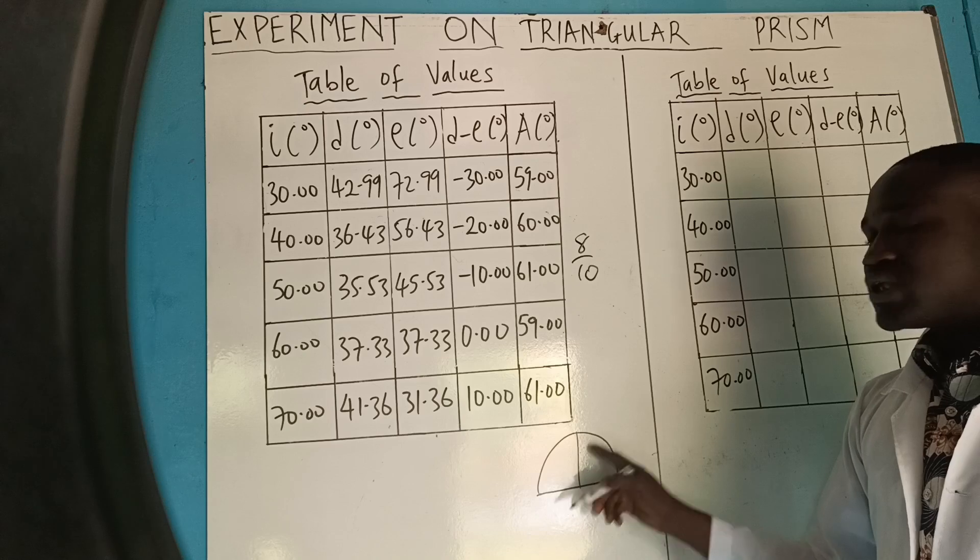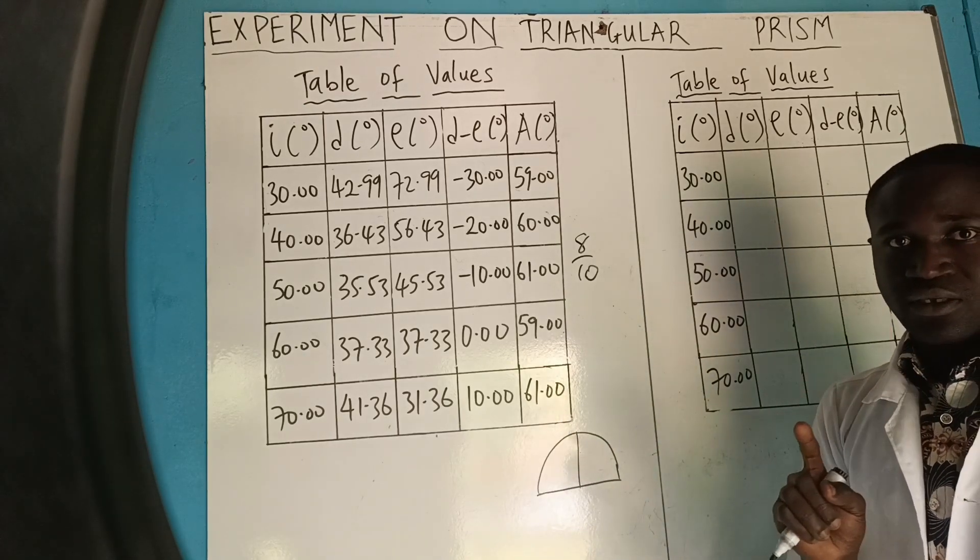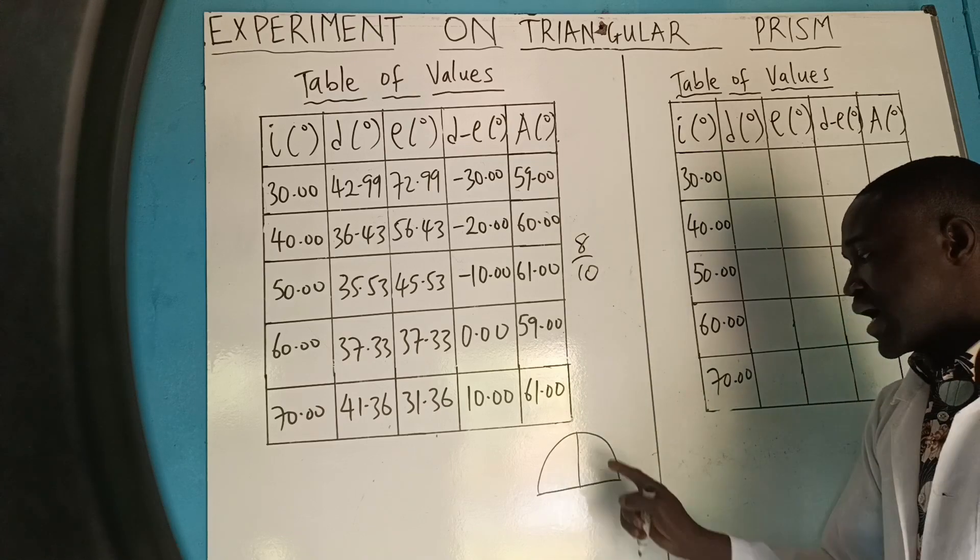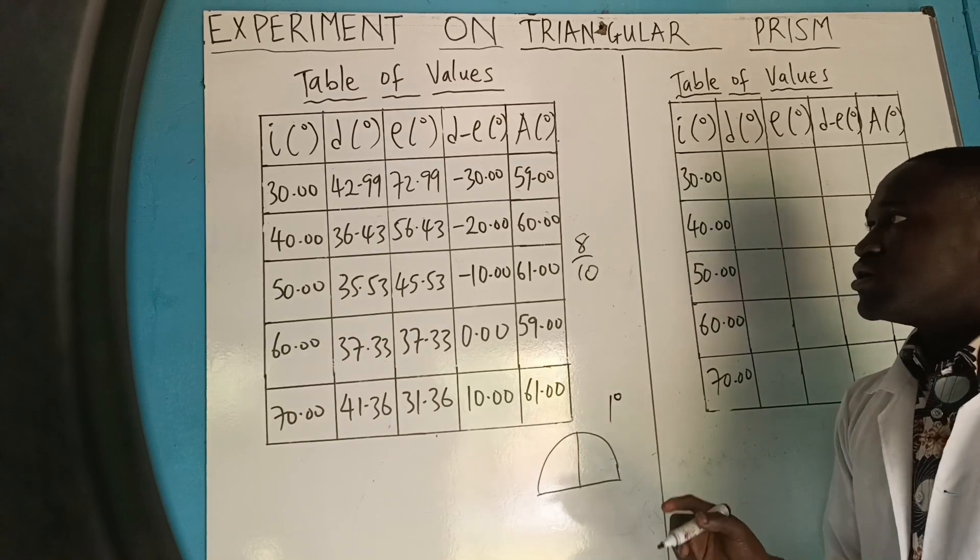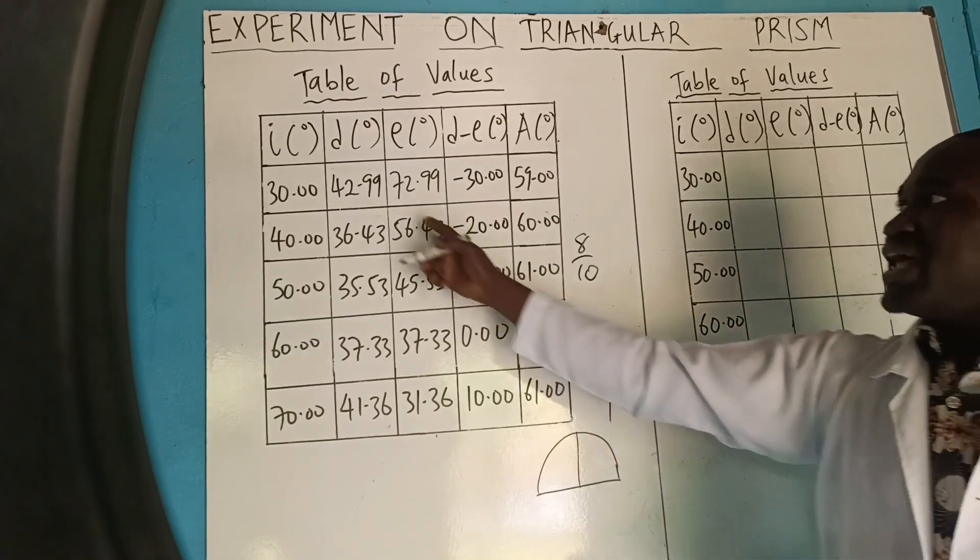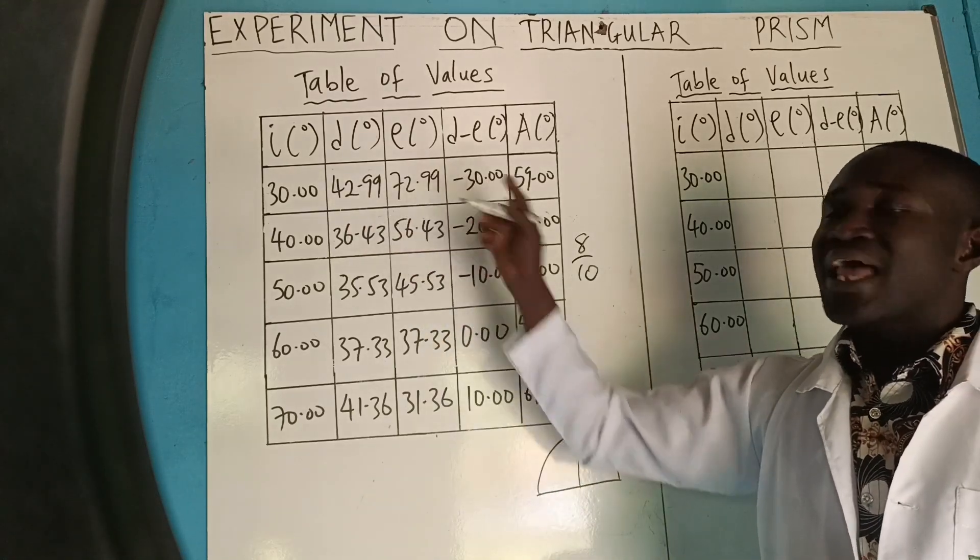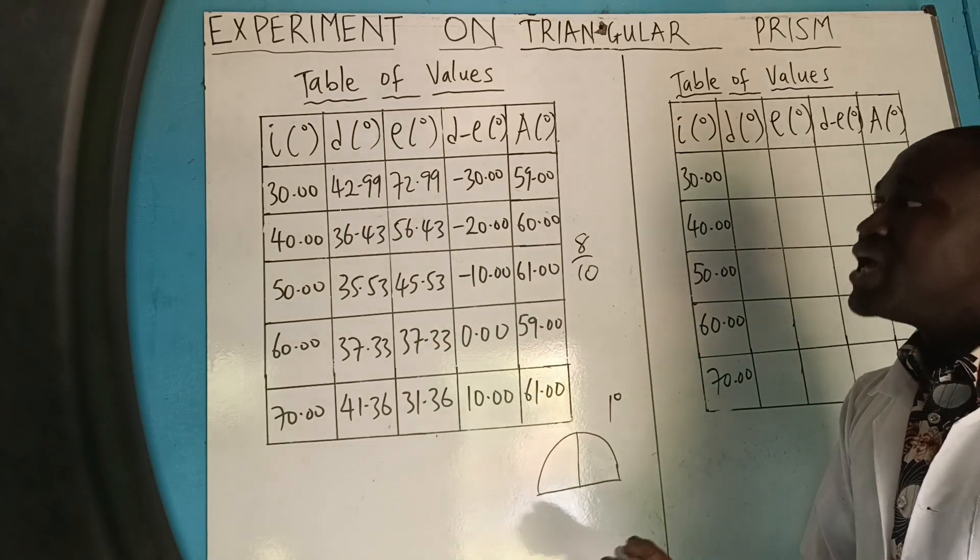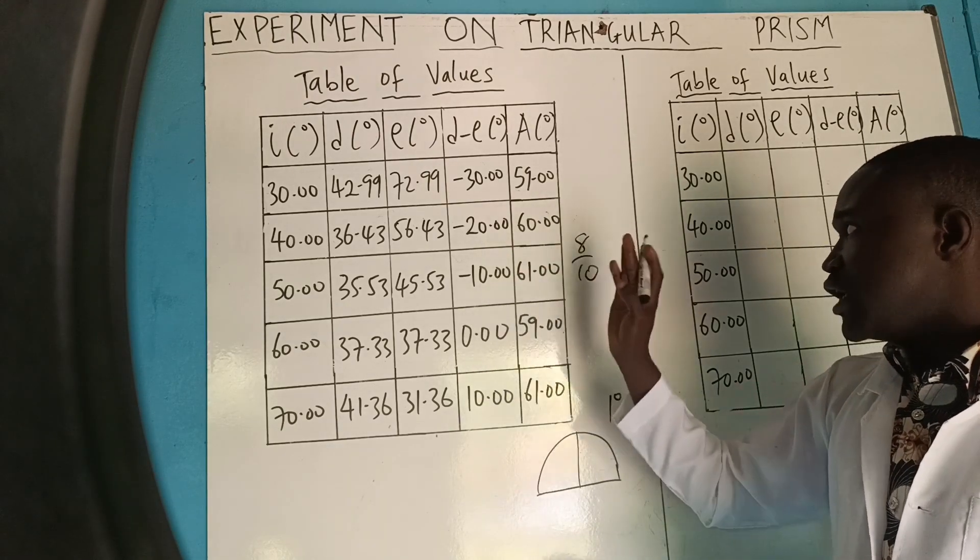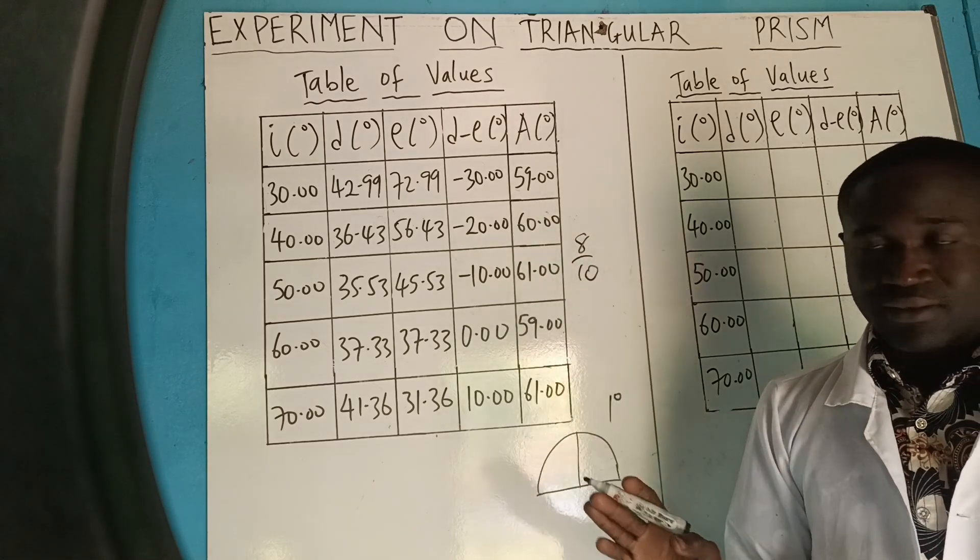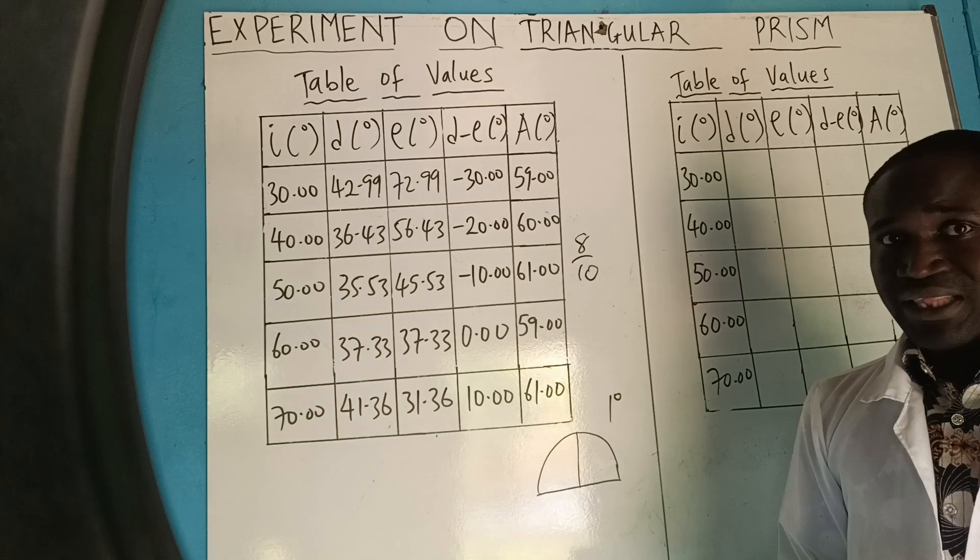And now, this Protractor, the least value you can get is what we call the reading accuracy or the maximum error you can get in a Protractor. So, the least value you can get is 1 degree, and so there is no way you can get 42.99 in Protractor. And that means you shouldn't submit this table if you want to get 10 over 10. So if you submit this table, you will be getting about 8 over 10.